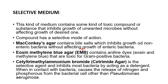Next is Eosin Methylene Blue agar, or EMB agar. It contains aniline dyes — eosin and methylene blue — that are toxic for gram-positive bacteria but not for gram-negative bacteria. Then there is Cetrimide agar, where cetrimide (cetyl trimethylammonium bromide) is a selective detergent that inhibits most bacteria by causing release of nitrogen and phosphorus from bacterial cells. Only Pseudomonas aeruginosa will flourish on Cetrimide agar while others are inhibited.